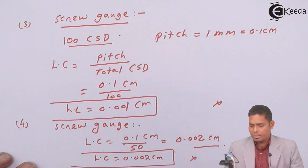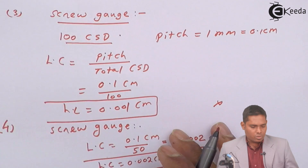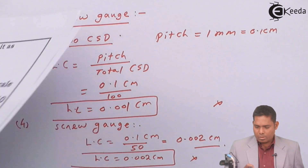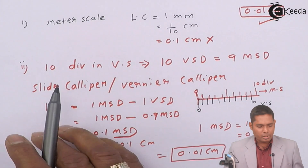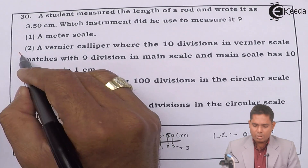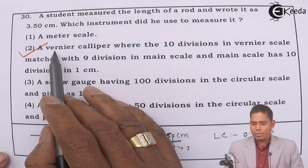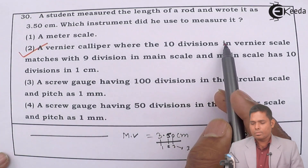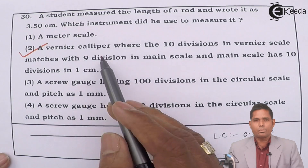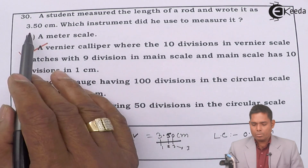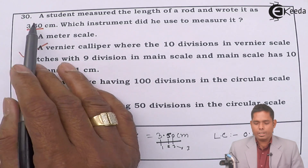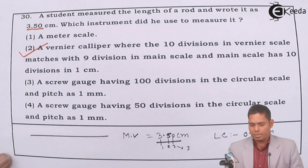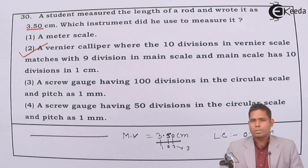This is also not our requirement. Therefore, the second option — a vernier caliper with 10 vernier scale divisions matching 9 main scale divisions — is the correct answer. This type of vernier caliper gives a least count of 0.01 cm, producing readings like 3.50 cm. That's all for this physics paper — thank you very much.